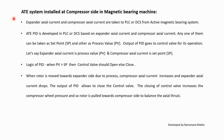For the AT installed at the compressor side in a magnetic bearing machine: expander axial current and compressor axial current are taken to the PLC or DCS from the active magnetic bearing system. An AT PID is developed in the PLC or DCS based on these currents. Either one can be taken as a set point and the other as a process value. The output of the PID goes to the control valve for its operation. Let's say expander axial current is the process value (PV) and compressor axial current is the set point (SP). The PID logic is: when PV is greater than SP, the control valve should open; otherwise close.